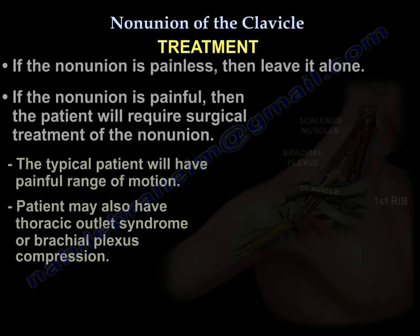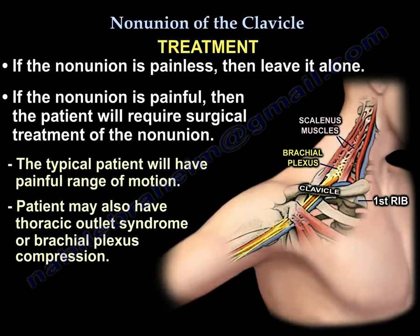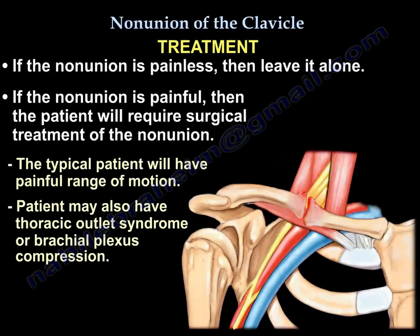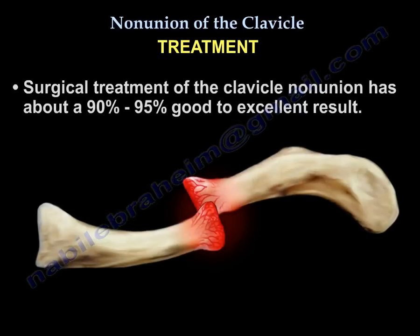Now, treatment. If the nonunion is painless, leave it alone. If the nonunion is painful, then the patient will need surgery. The typical patient will have a painful range of motion. The patient may also have thoracic outlet syndrome or brachial plexus compression.